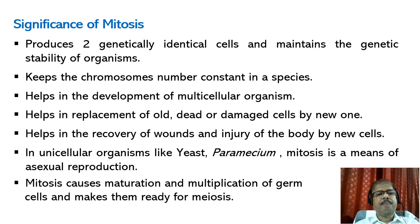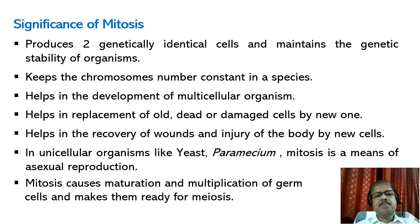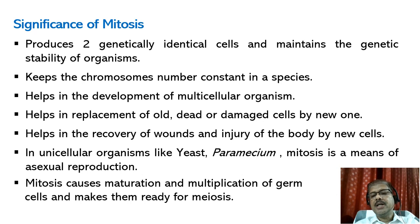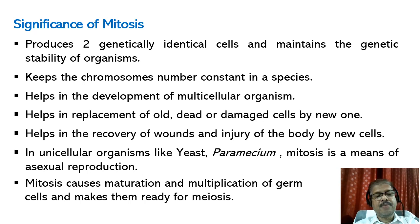Significance of mitosis: mitosis produces two genetically identical cells, so it maintains the genetic stability of organisms. DNA remains constant, so mitosis keeps the chromosome number constant in a species. It helps in the development of multicellular organisms and in the replacement of old, dead, and damaged cells with new ones. It aids in recovery from wounds and injury by forming new cells. In unicellular organisms like yeast and Paramecium, mitosis is a means of asexual reproduction. Mitosis also causes maturation and multiplication of germ cells, making them ready for meiosis.